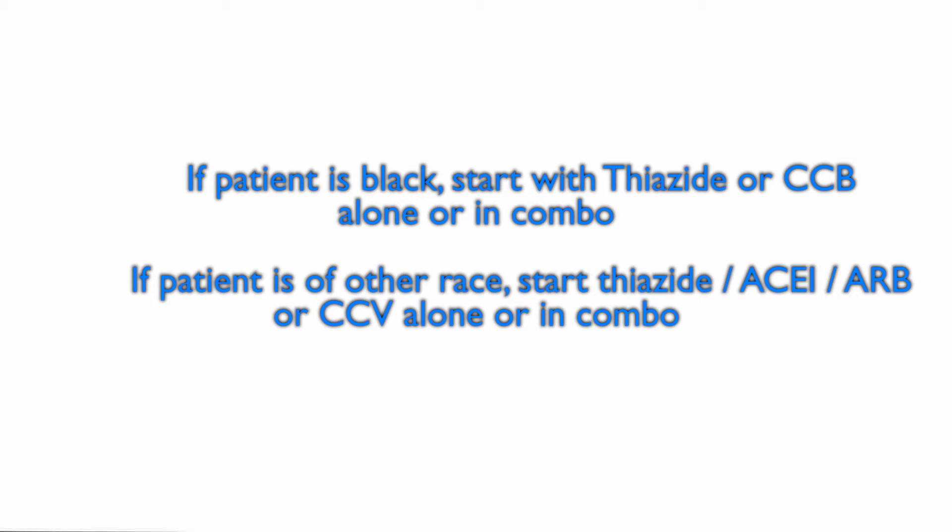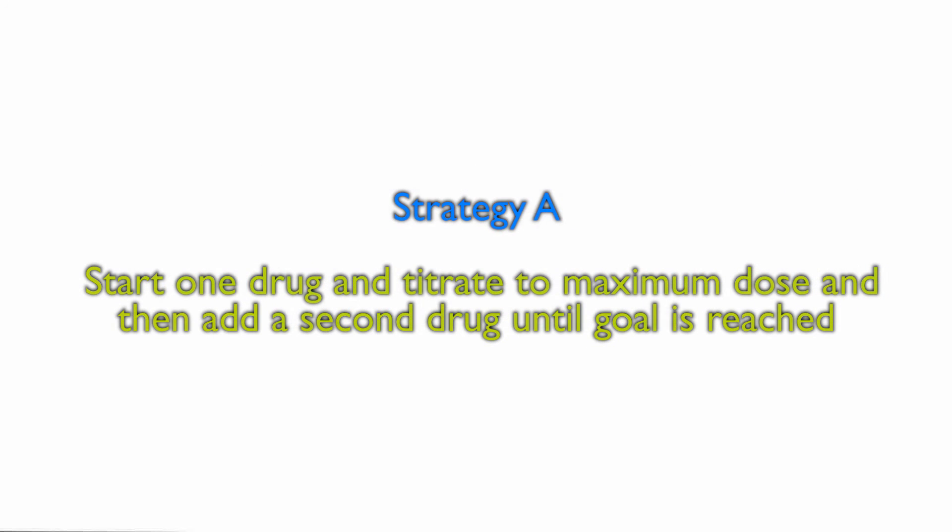The guidelines encourage everyone to start with thiazide diuretics or an ACE inhibitor. Strategy A is to start with one drug, titrate to maximum dose, and then add a second drug until the goal is reached. You keep titrating up until the goal is reached, and if it's not reached by the time you hit the max, you add a second drug.